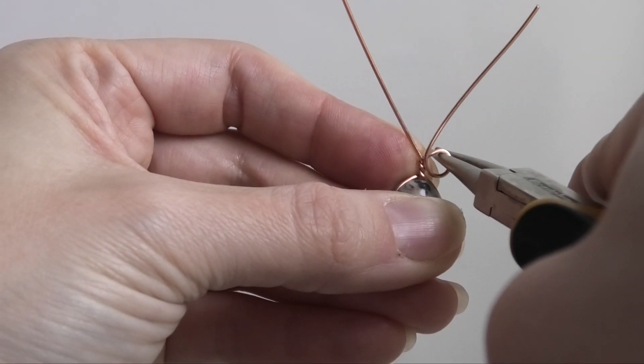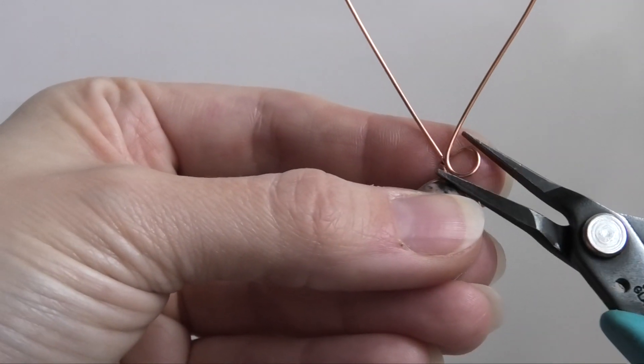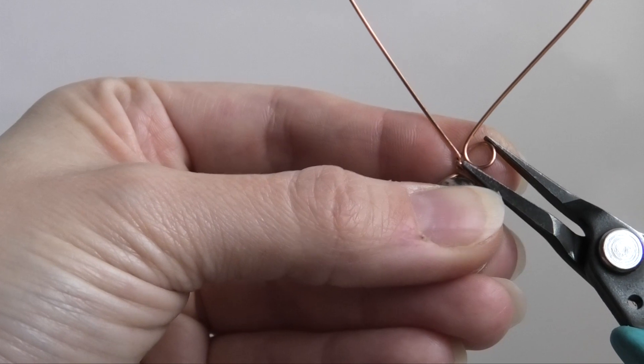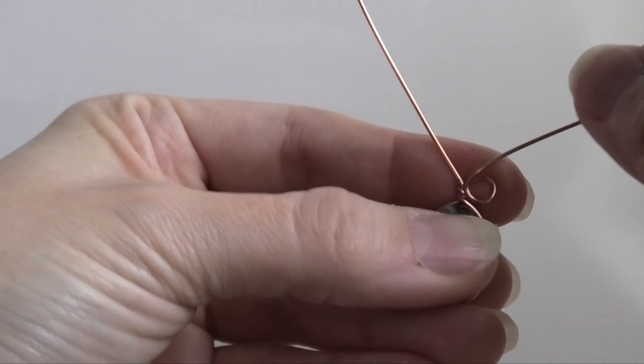So I just want it to be a little bit smaller, so I'm just going to use my regular pliers to just kind of close up that circle a little bit. There we go.